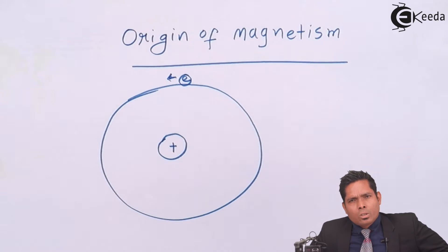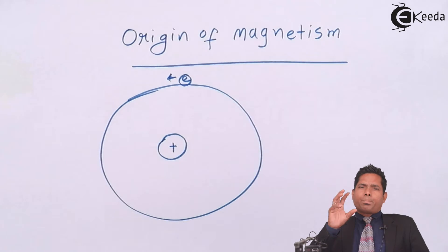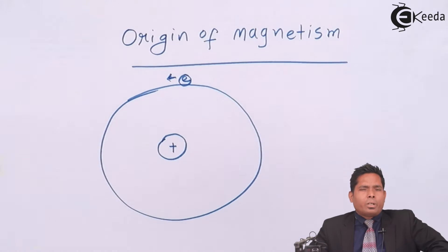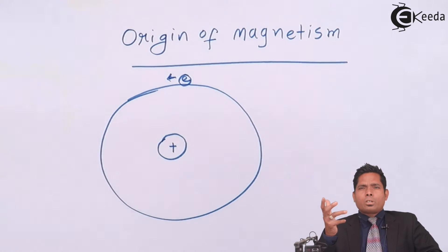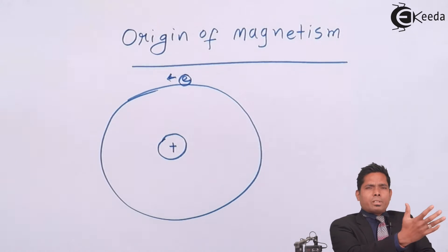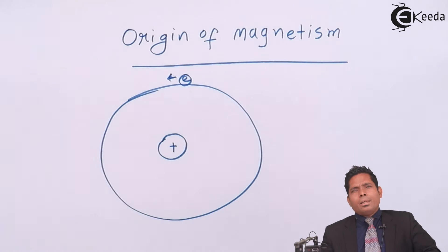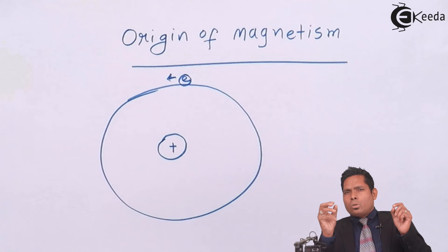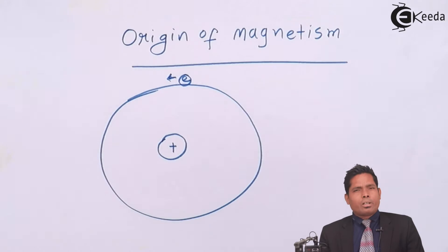The Earth has also got two types of motion: one is spin motion, because it spins about its own axis which gives rise to day and night, and orbital motion of Earth around the Sun which gives rise to the seasons. Similarly, if you think of the electron as the Earth, it not only spins about its own axis, it also revolves around the nucleus.